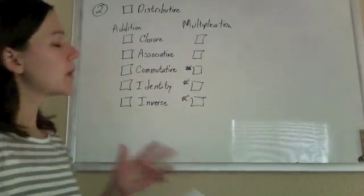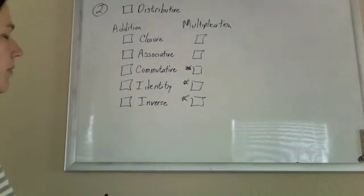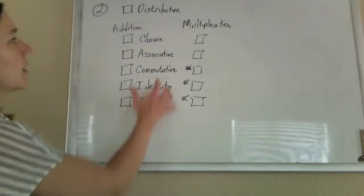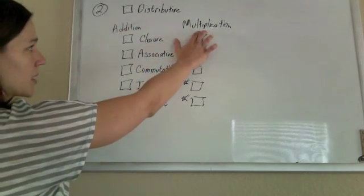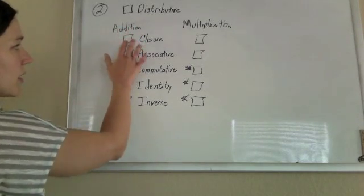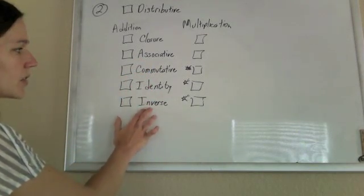Alright, so we need to prove that the rational numbers are a field. In order to be a field, we need to satisfy all of these lovely properties. You have two operations, usually addition and multiplication, and under addition they have to be closed, associative, commutative, identity, and inverse.